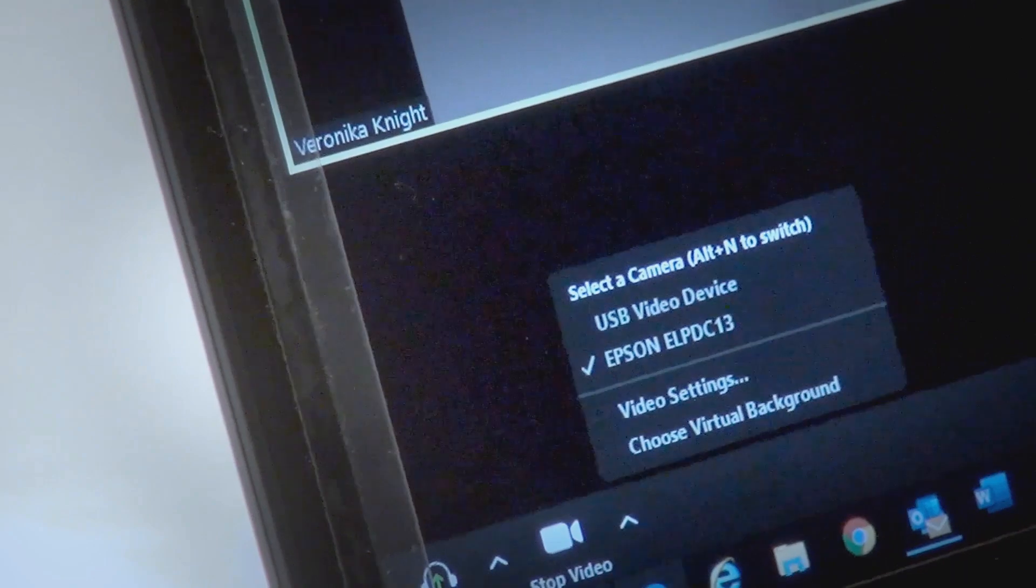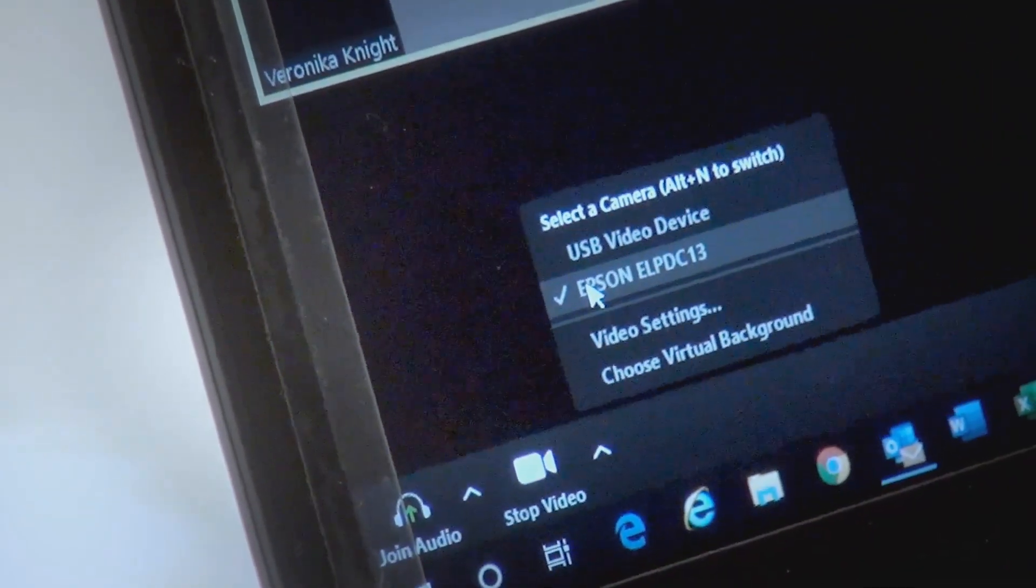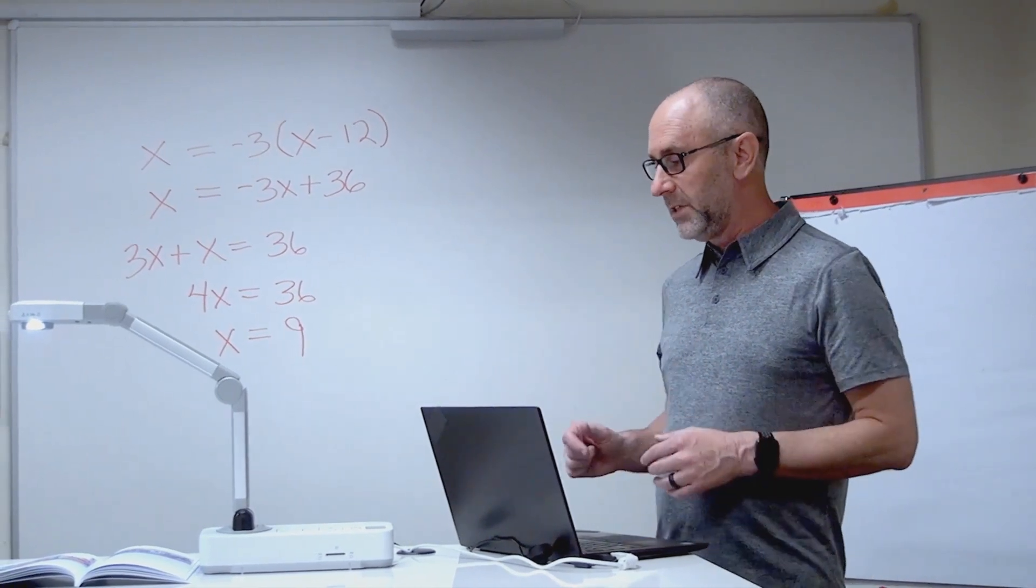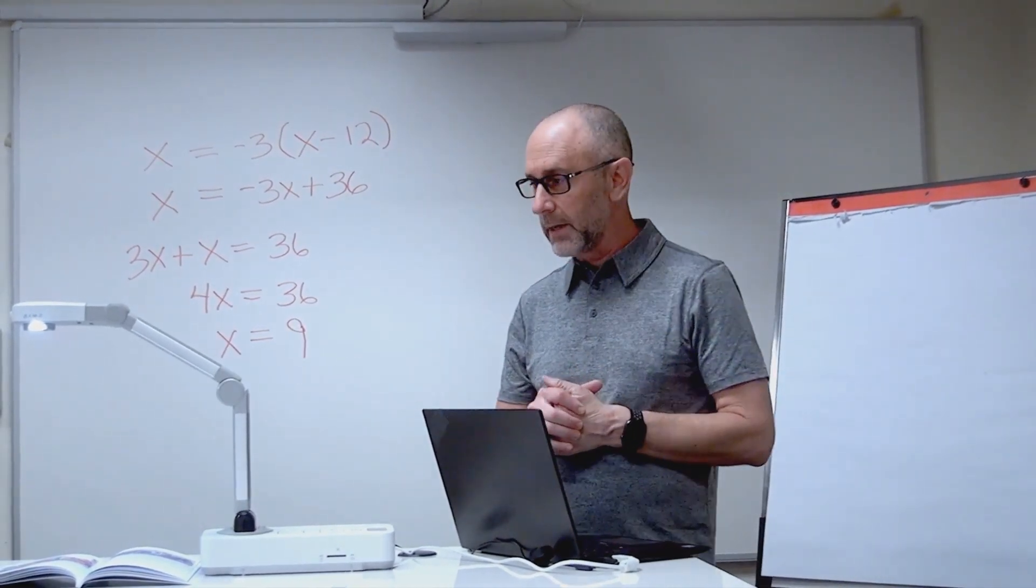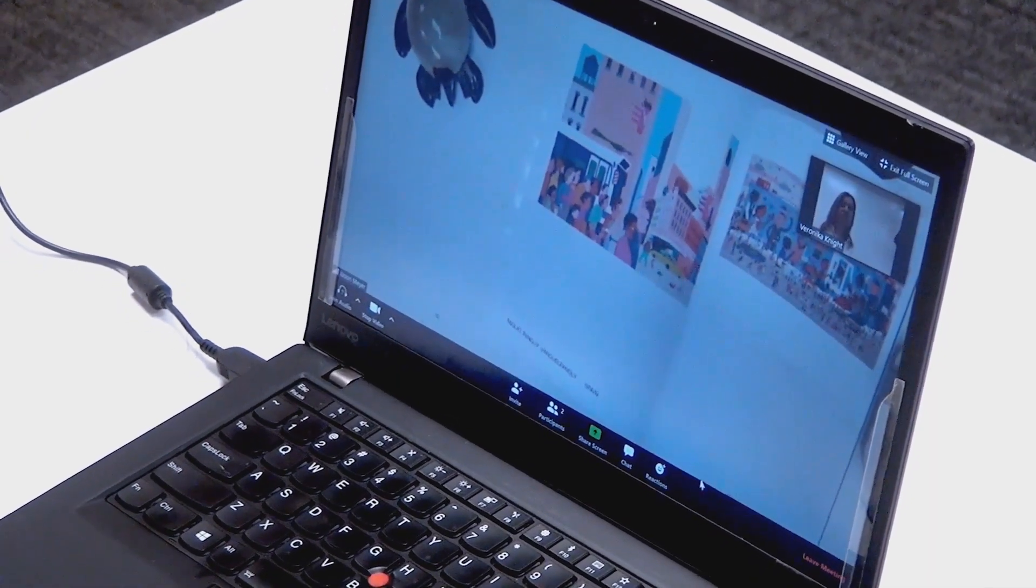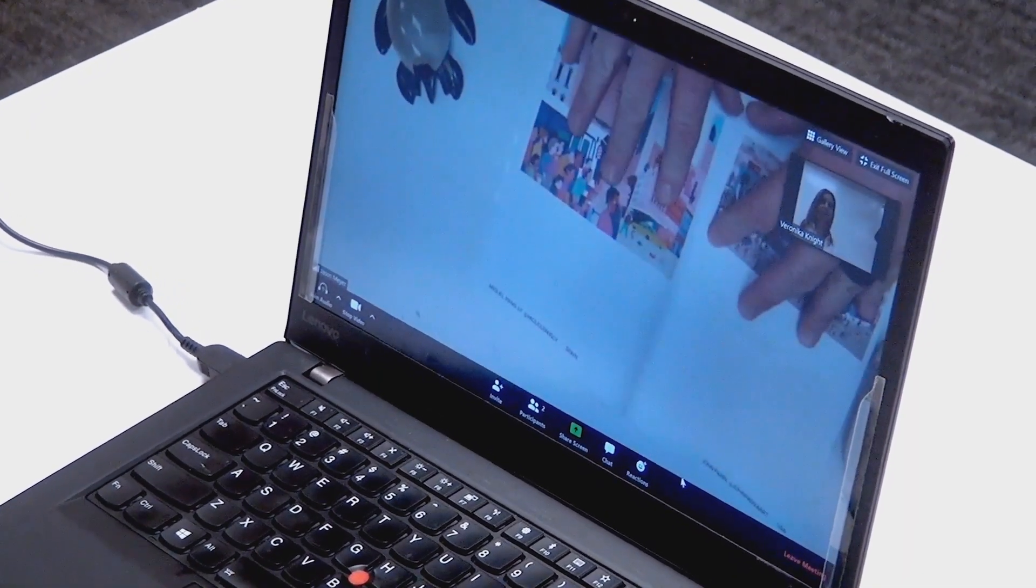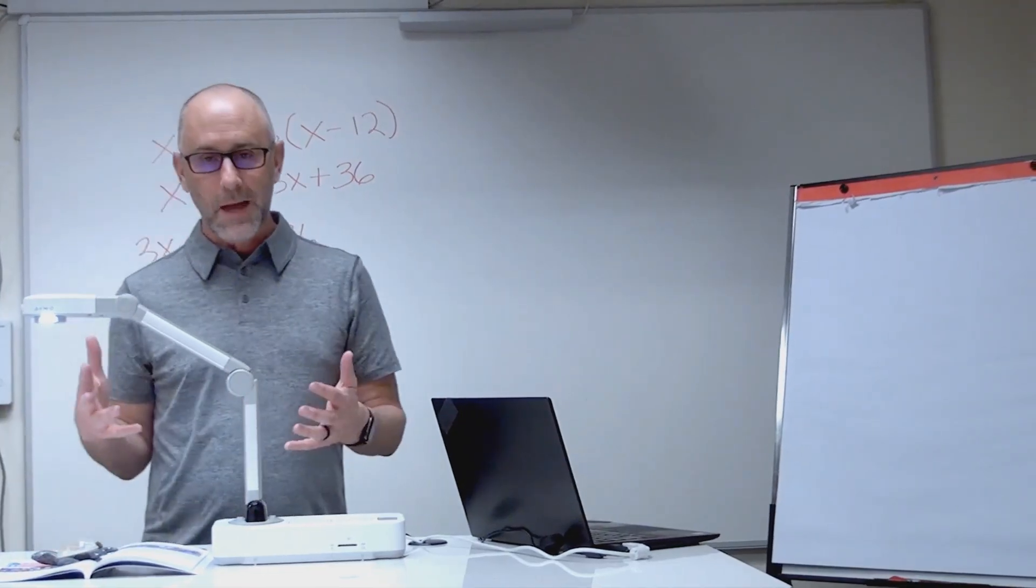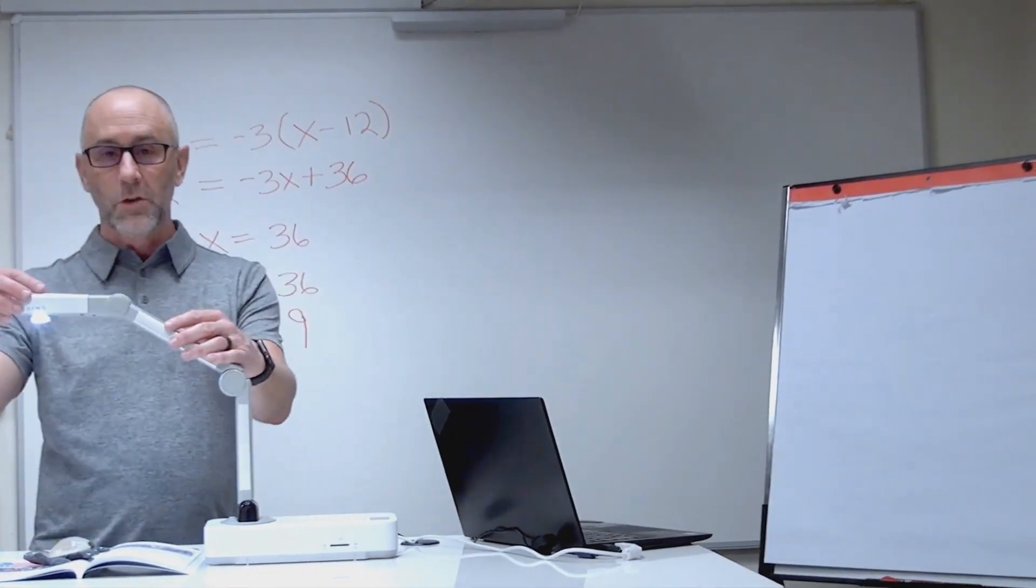I'm going to click on the document camera, and it'll take a few seconds. The document camera will connect. Once it's connected, I can start showing documents or objects under the document camera. That's what you use a document camera for.